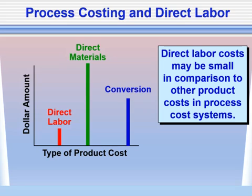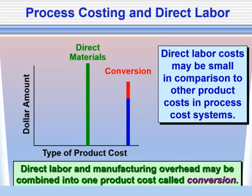In today's economy, direct labor costs are becoming small when compared to materials and overhead costs, and the reason for this is automation. As a consequence, many companies are now just combining labor and overhead and referring to them as total conversion costs — the costs incurred to convert the direct materials into a finished good. We will use this title quite frequently going forward.